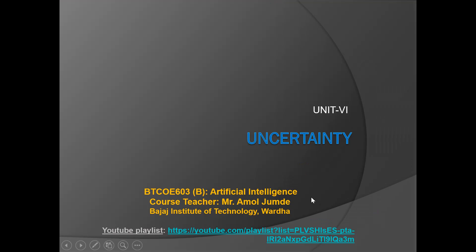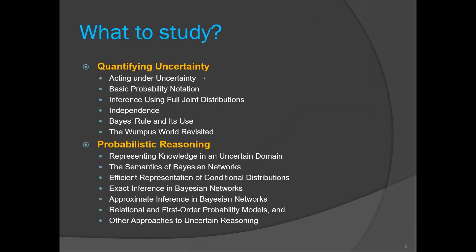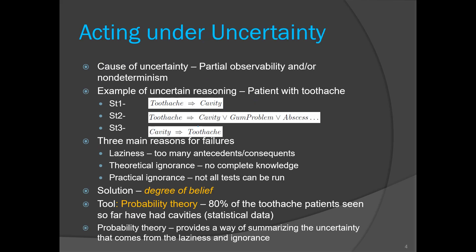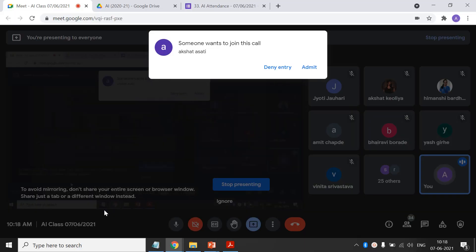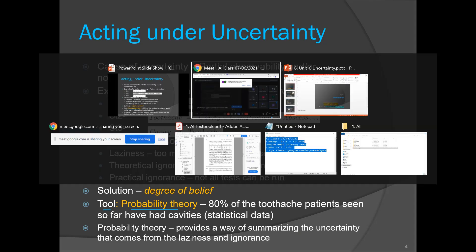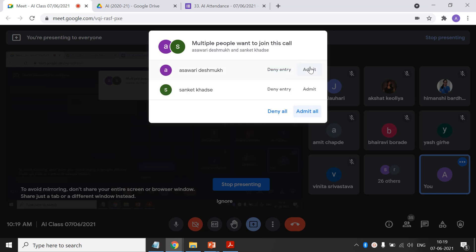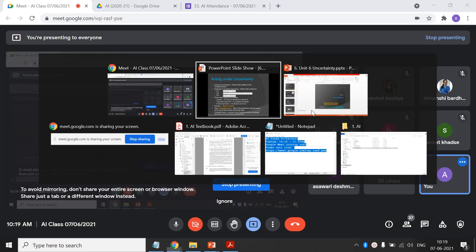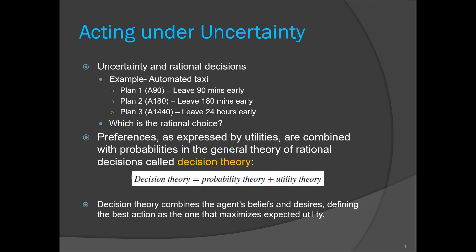We are currently studying our sixth and final unit on uncertainty. In the previous session we discussed two points, and today we are going to talk about three more. We covered probability theory as a tool to handle uncertainty — there are other approaches, but we majorly use a probabilistic model. We discussed its significance through various examples and its importance in decision theory.